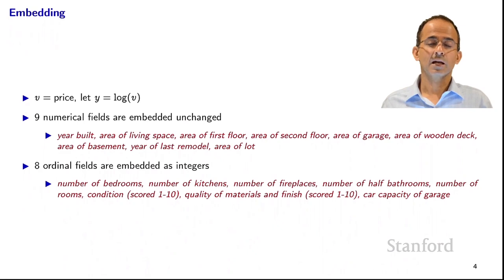There are also ordinal fields in our features, and we will embed those as integers. So we have number of bedrooms, number of kitchens, number of fireplaces, number of half bathrooms, number of rooms, condition. Condition is a number that's scored between 1 and 10, that's assigned by an expert, presumably an appraiser or a realtor. We have the quality of the materials and the finish, again, assigned by an expert, but it's a score between 1 and 10, and the number of cars that the garage can hold. So these are all small integers, typically between 0 and 10, and we just embed them as they are.